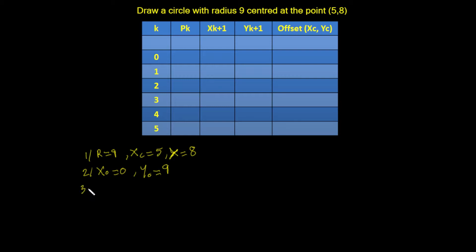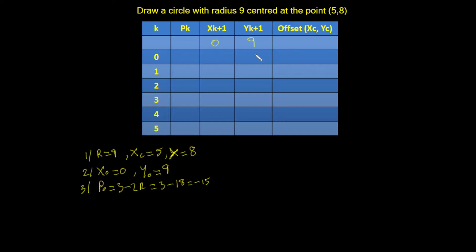We work out the initial decision value. The first decision value p0 = 3 − 2r = 3 − 2×9 = 3 − 18 = −15. So we put in pk = −15.